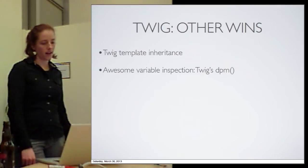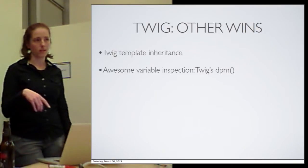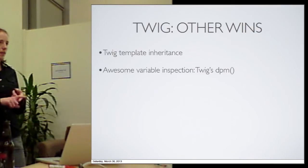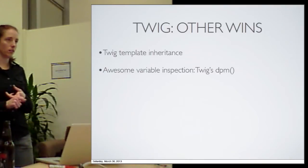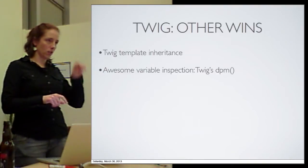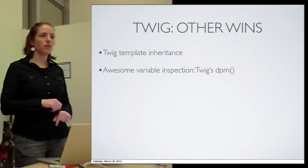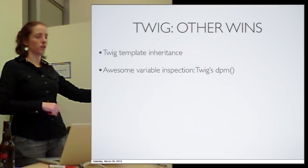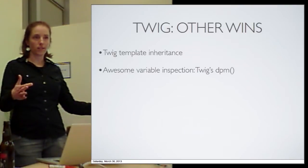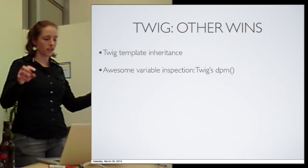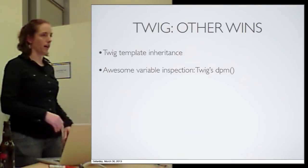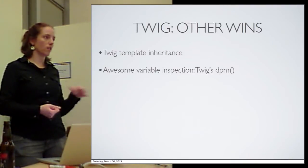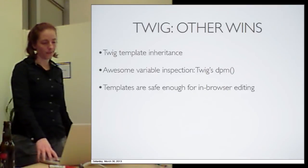We also have variable inspection built into core. If you want to see which template file is being called and where your variables are coming from, you can turn on Twig debug mode and it'll say 'here's the name of this template file and here are the variables going into it.' You don't need to install a developer theme or anything to figure out what was just printed to the page. So it'll also make theme development a lot easier.